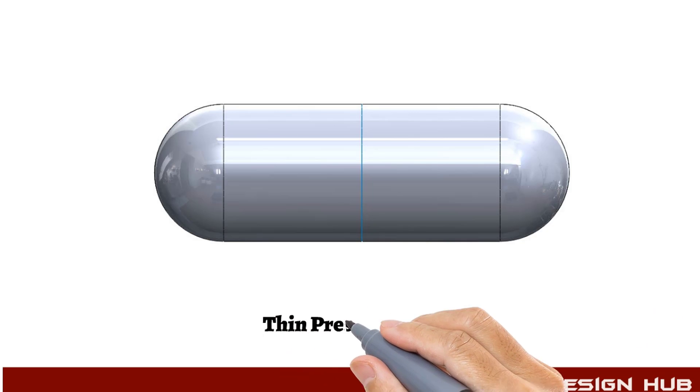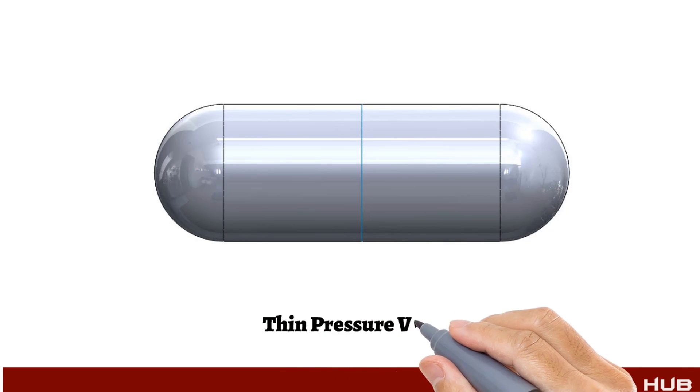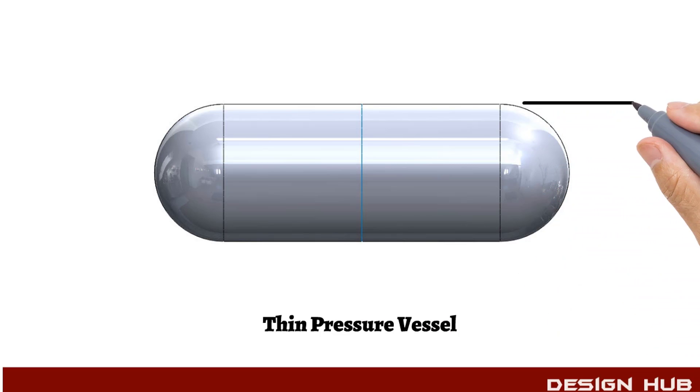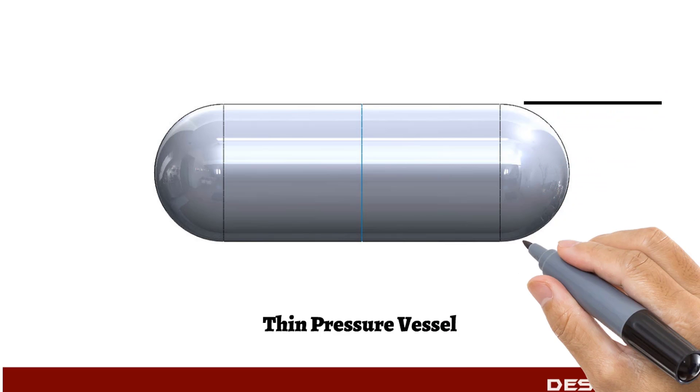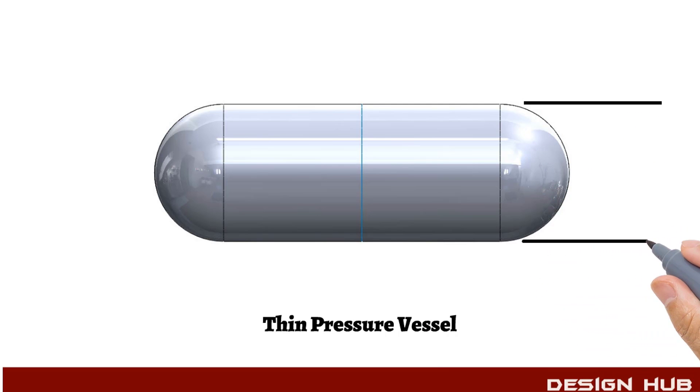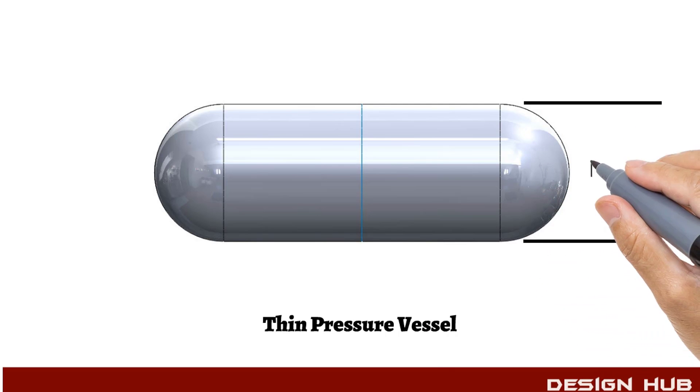Thin vessel design planning: this vessel diameter equals 1.5 meters, seam to seam length equals 3 meters.